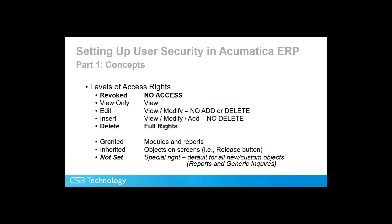Next, let's talk about levels of access rights. We provide access to a screen, and then we say what access we allow on that screen. Starting with the lowest level of access, which provides no access, called Revoked, and you see View Only, Edit, Insert, and Delete. Delete is full rights, meaning that a user can not only create and modify, but also can delete transactions on that screen.